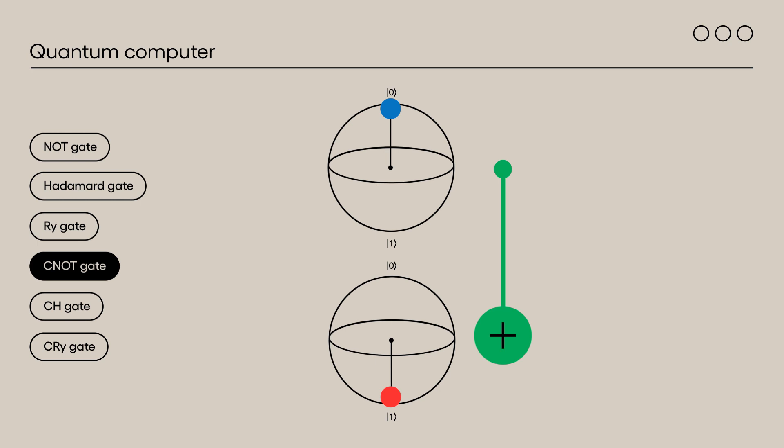These gates use two qubits, a control qubit and a target qubit. If the control qubit is in the one state, the controlled gate is applied to the target qubit.